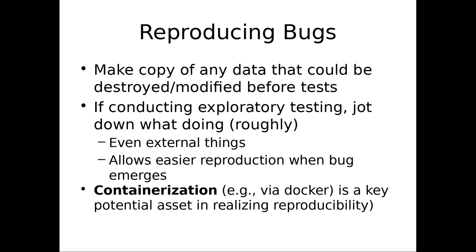In terms of reproducing bugs, if you're running a test, you don't want that test to change things in a way that makes it impossible to run again with exactly the same conditions. If you have to manually copy the data so you know you're starting from the same point in terms of the database, do so. Don't let it be destroyed — if you scan something in and it changes the state of the database, after that you can never reproduce it because the database has changed. Instead, make a copy so you're starting from the same starting point.